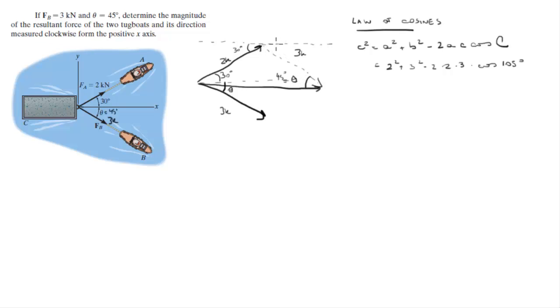So we know that this angle is also 45 degrees. So this whole thing is 180 degrees. Therefore, this angle right here is 180 minus 30 minus 45, which is 105.